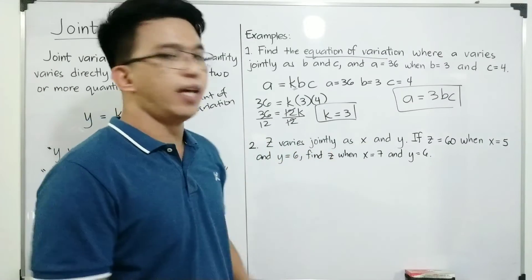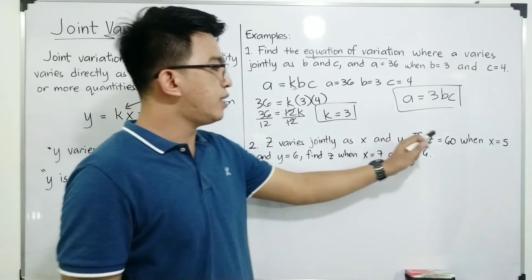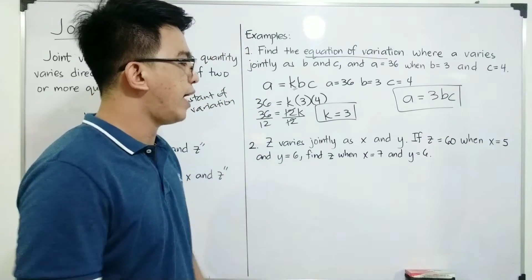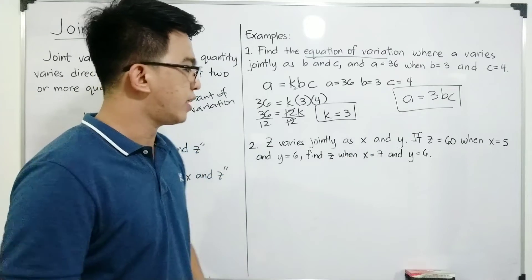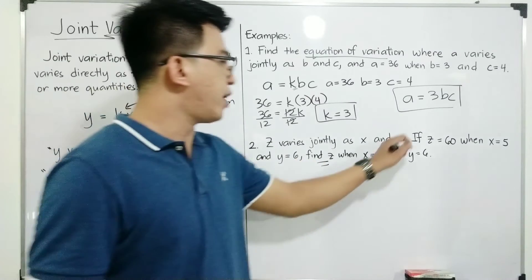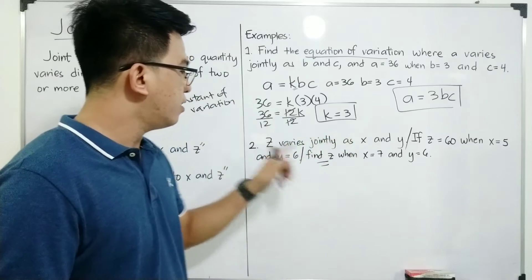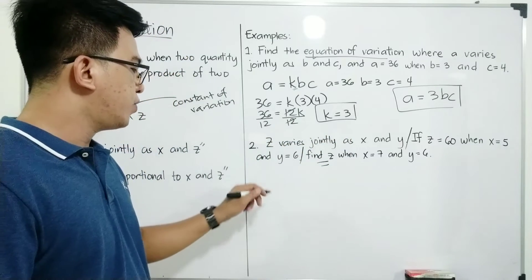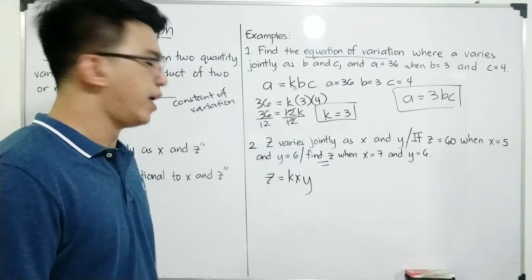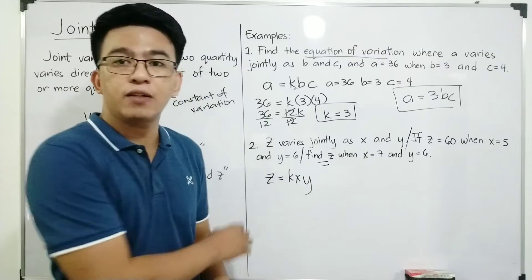Second problem: z varies jointly as x and y. We have three variables: z, x, and y. If z is equal to 60 when x is equal to 5 and y is equal to 6, find z when x is equal to 7 and y is equal to 6. What we need to find is z. First step is to break it down. Z varies jointly as x and y, so it can be translated as z is equal to k times x times y. After translating, we need to find the constant of variation.